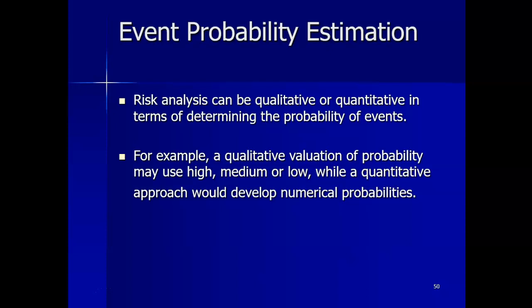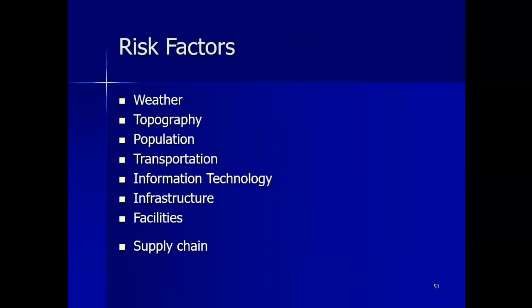Risk analysis can be qualitative or quantitative in terms of determining the probability of events. A qualitative valuation of probability may use designations such as high, medium, or low, while a quantitative approach would develop numerical probabilities. Estimating the probability of events involves reviewing historical data and discussing events with relevant groups such as the fire department, weather bureau, utilities companies, computer virus incident monitoring agencies, police departments, building engineers, reliability engineers, and government agencies. In determining what data are necessary to collect, it is important to consider risk factors including weather, topography, population, transportation, infrastructure, facilities, and supply chain.